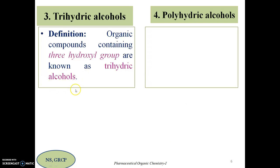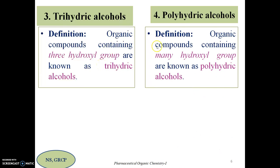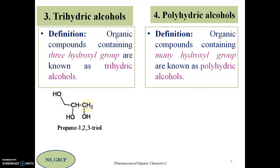Trihydric alcohols are organic compounds containing three hydroxyl groups in their structure. Polyhydric alcohols — the meaning of 'poly' is many — these organic compounds have many hydroxyl groups in their structure. The example for trihydric alcohol is a molecule with a three-carbon chain and three hydroxyl groups, one on each carbon. With hydroxyl groups at positions 1, 2, and 3, three hydroxyl groups are named as triol. So this is propane-1,2,3-triol.